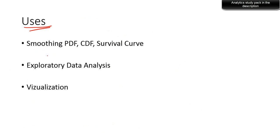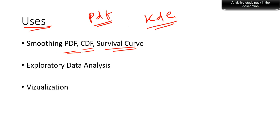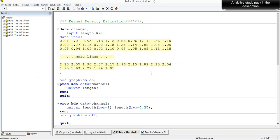KDE is used to calculate the PDF for data that doesn't have a proper theoretical PDF. In most real-world scenarios, data won't fit a theoretical distribution, and to get a smooth PDF, CDF, or survival curve you use kernel density estimation. It's very useful for understanding the distribution of data and doing exploratory data analysis — seeing how your data is distributed across different quantiles and percentiles.